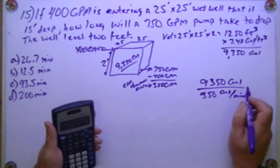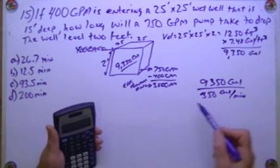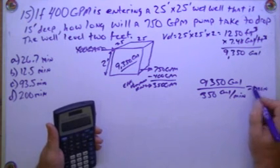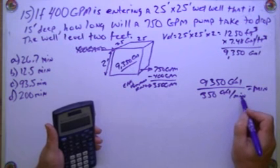Whenever you get stumped on one of these just look at the units. Because you set it up like this and that's going to give you minutes. Because the gallons are going to cancel out and you're going to get minutes.